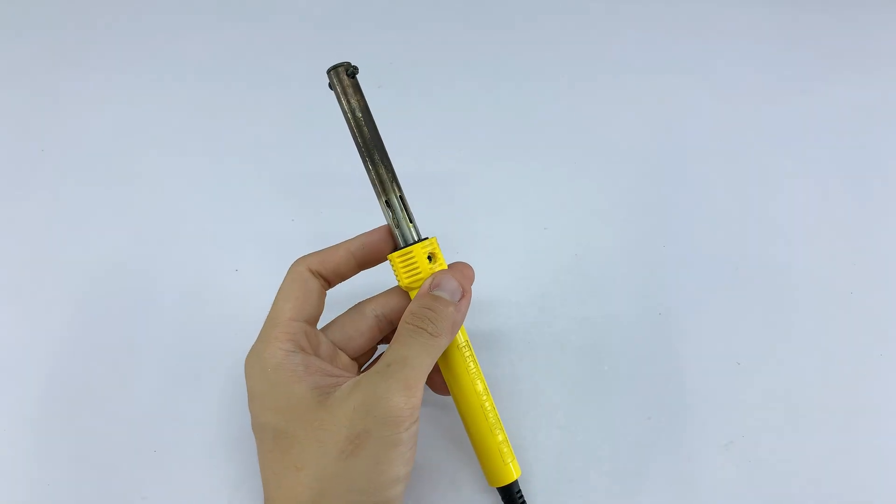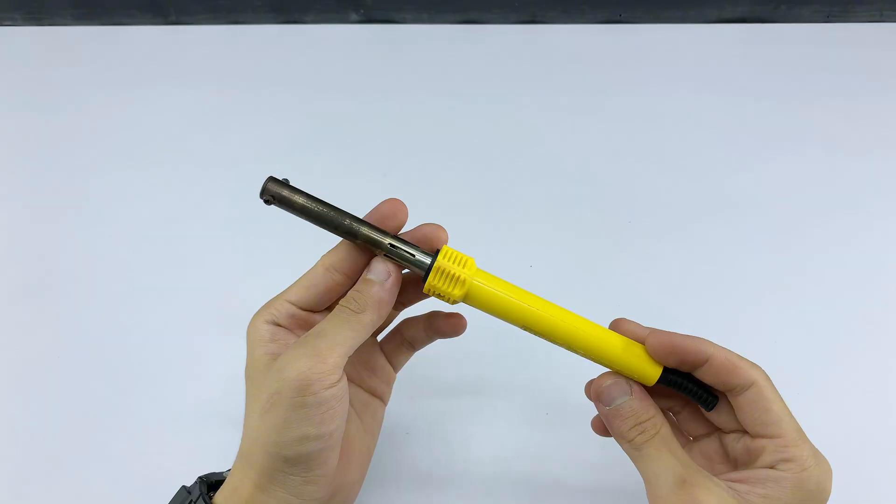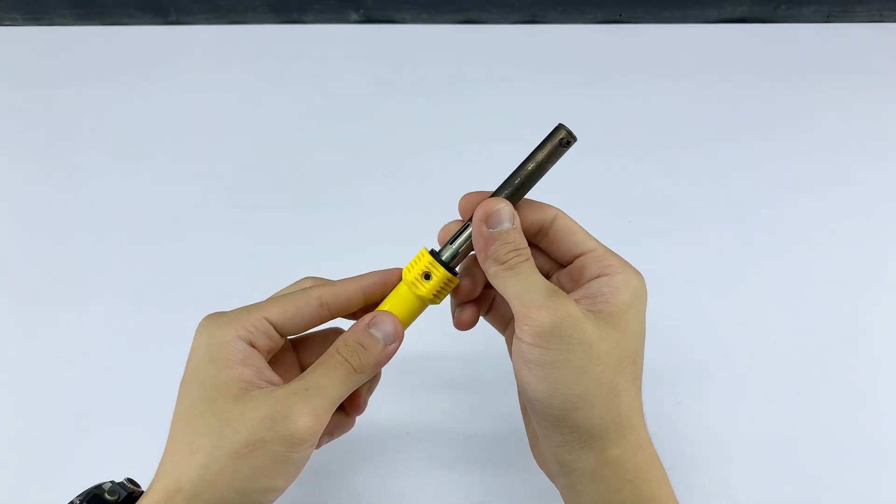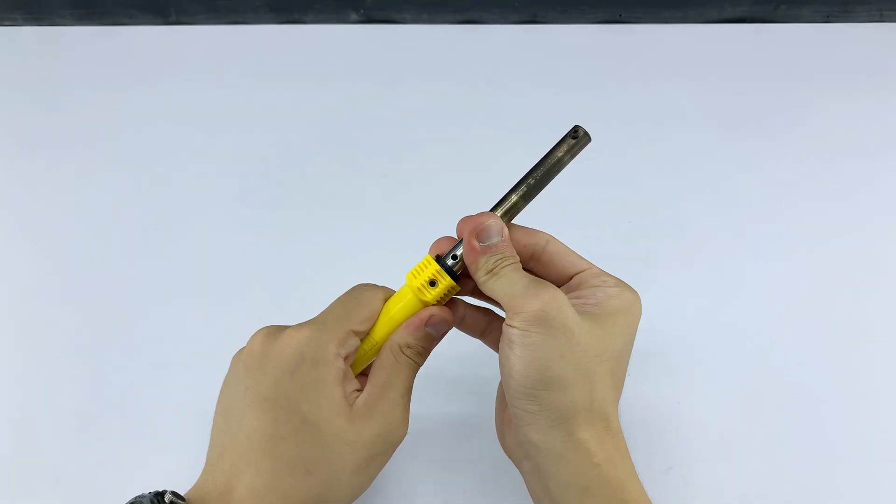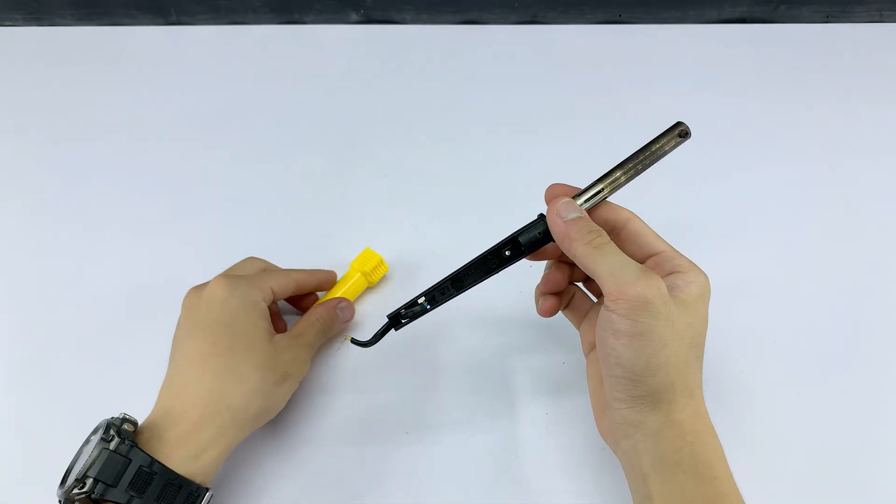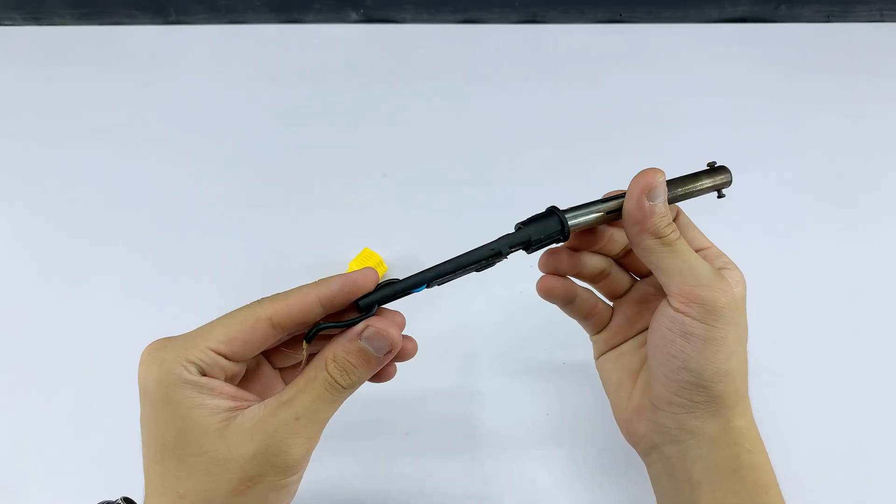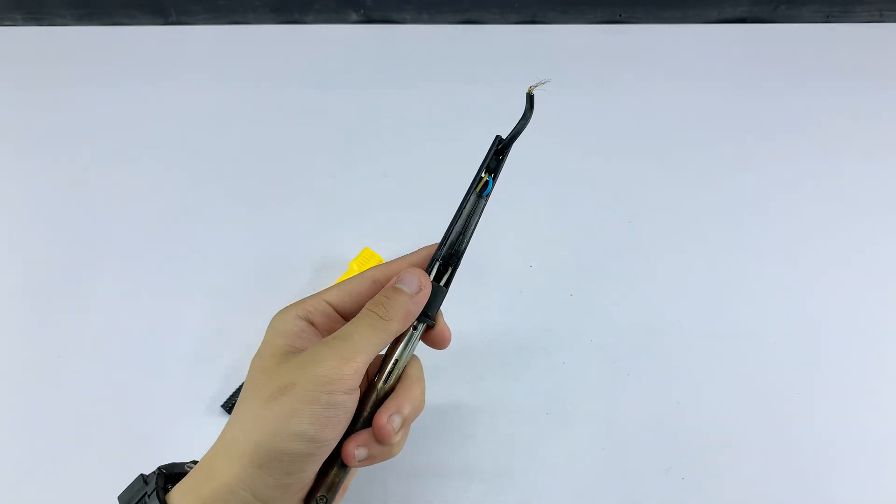I'm going to start by carefully disassembling this old soldering iron. A simple screwdriver is all it takes to remove the main screw holding the handle in place. With the screw removed, I can now slide off the outer yellow casing, revealing the internal structure.